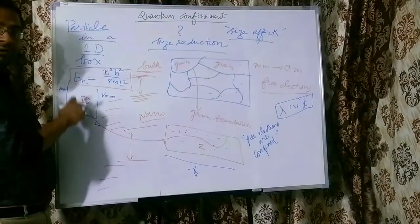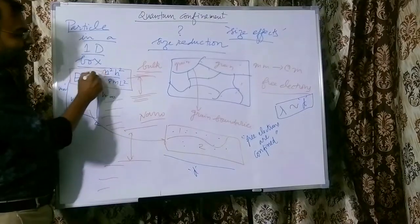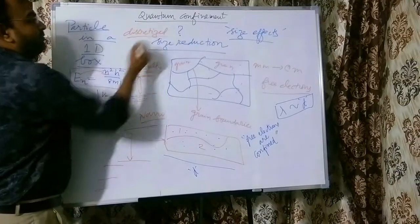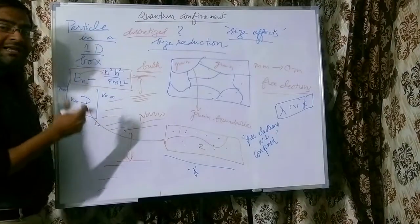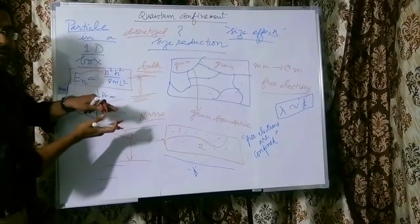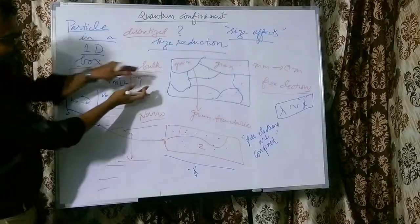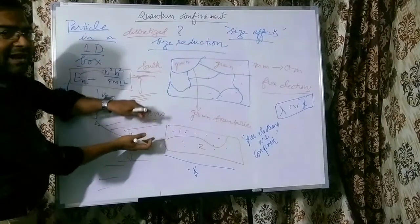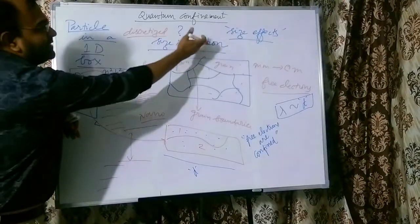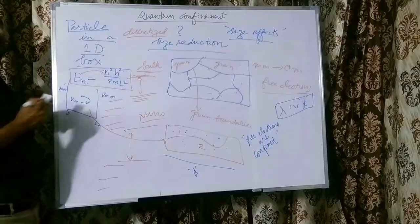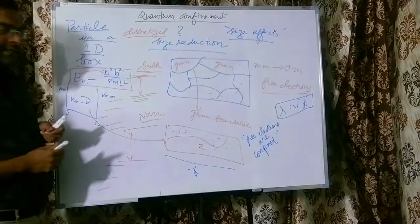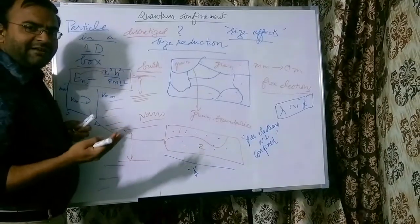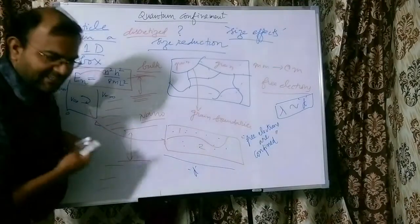When an electron is confined in a box, the energy levels are quantized or discretized. When the energy levels are quantized, the levels are getting separated out. That is what is happening when the band gap in a bulk material and the nanomaterial are compared — the band gap is going to be widening in the nanomaterial because of size reduction. This is one of the very important effects of quantum confinement.